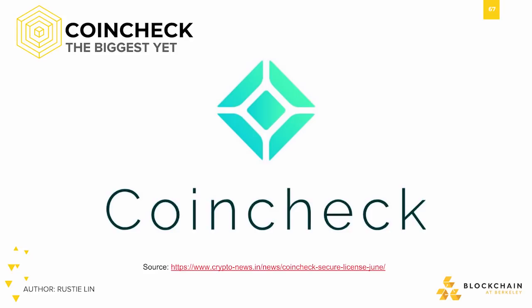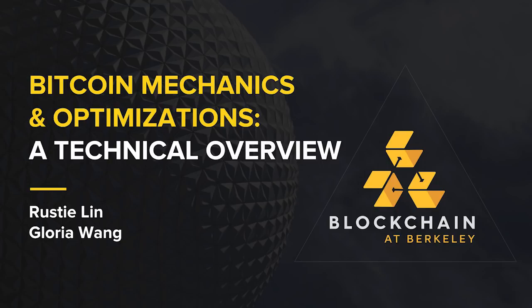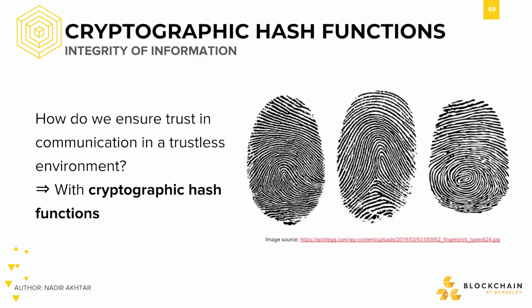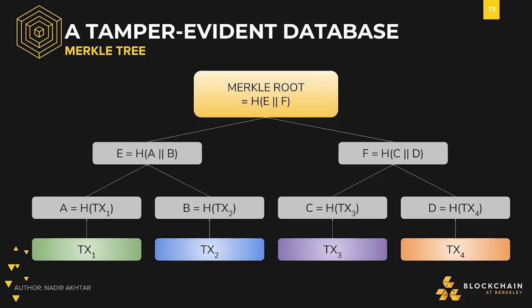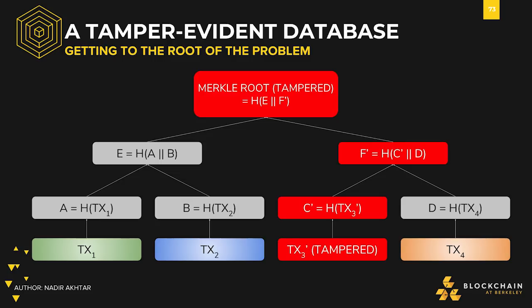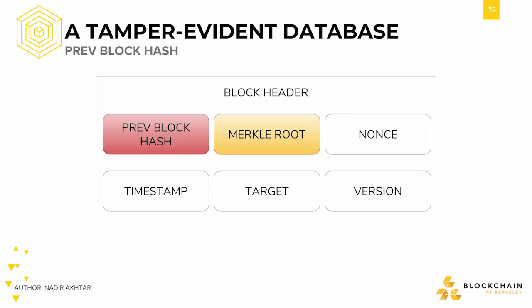After going through some context around Bitcoin and blockchain, we went into the details of Bitcoin in the Bitcoin Mechanics and Optimizations lecture. We taught you about cryptographic hash functions and how they can ensure trust in a trustless environment. We then started to dissect the blockchain, taking a look at the components of a block and a block header. We took a look at the Merkle root, the summary of transactions, saw what happens if someone tampers with it, and proved how we can show that a transaction is within a block without looking at every single transaction in that block.